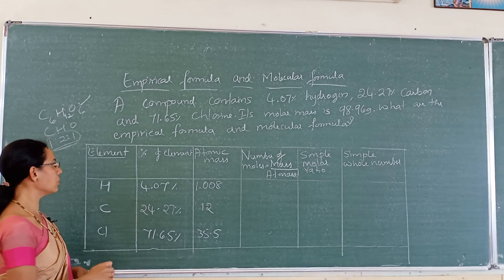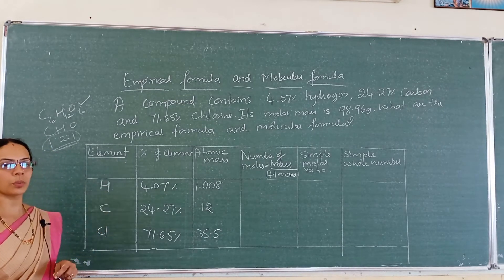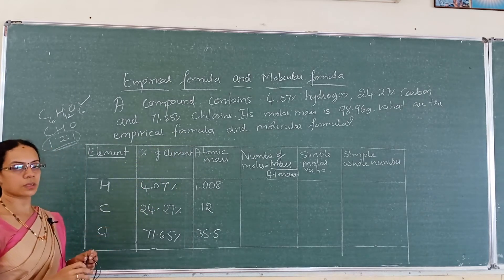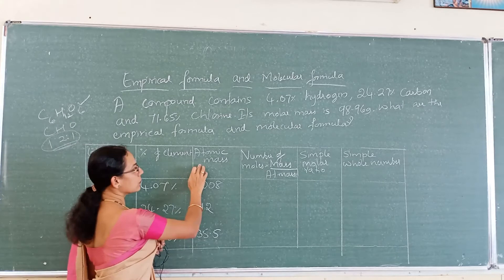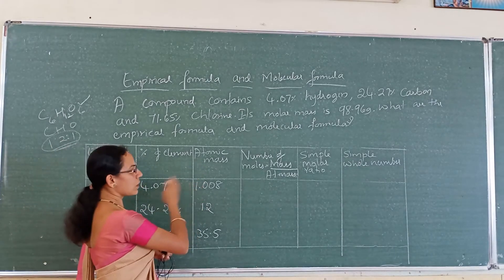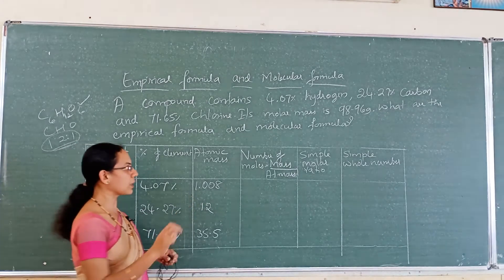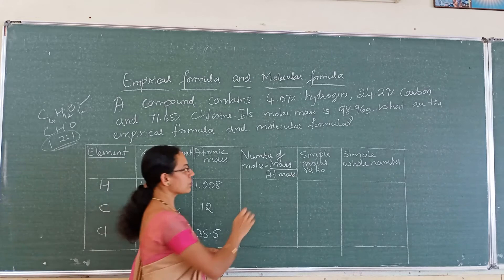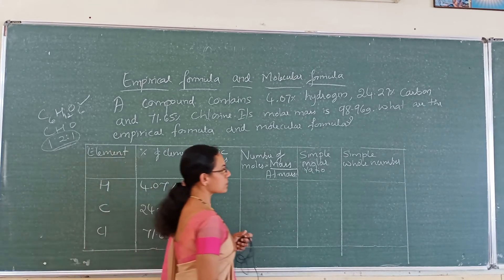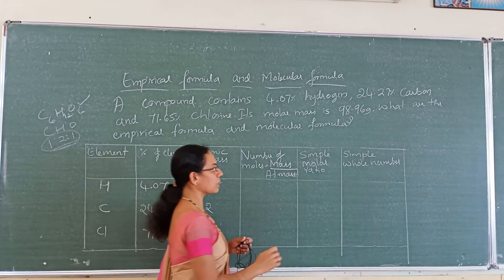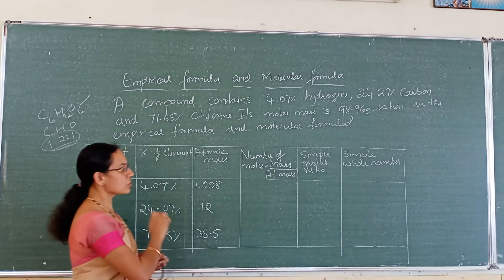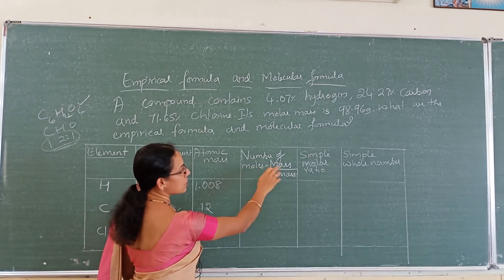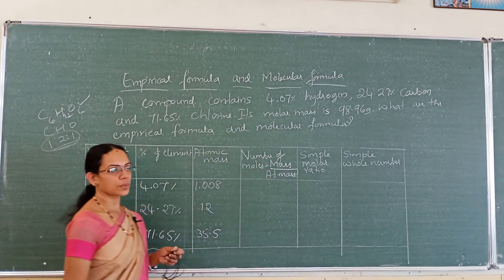To solve this, we draw a table with these columns: element, percentage of element (given in the problem), atomic mass (from the science data book), number of moles (calculated as mass divided by atomic mass), simple molar ratio, and simple whole number ratio. Fill in the table for each element: hydrogen, carbon, and chlorine.